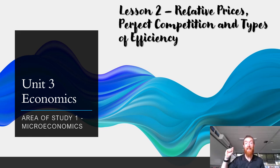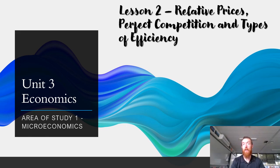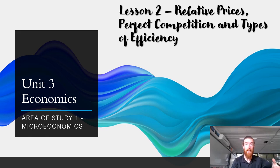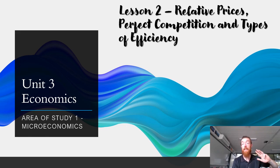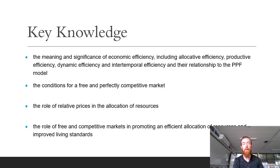Today we're going to be looking at relative prices, perfect competition, and types of efficiency. These are all things that were in the previous study design. What is new is that we are going to be tying in some of the types of efficiency with the production possibility frontier, which we hadn't had to do previously.